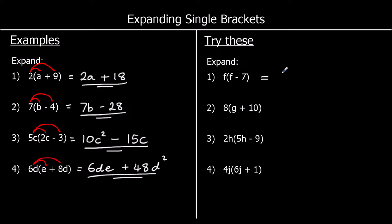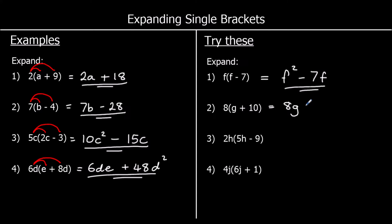The first one: f times f is f squared, and f times a negative 7 is negative 7f. The second one: 8 times g is 8g, and 8 times 10 is 80, so positive 80. So we write plus 80.